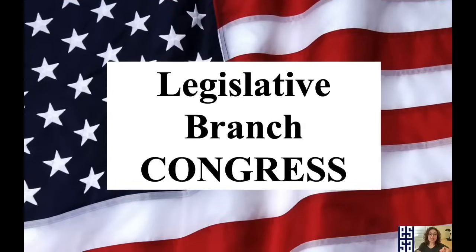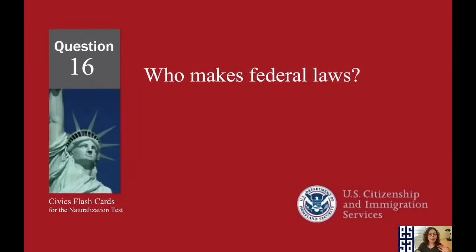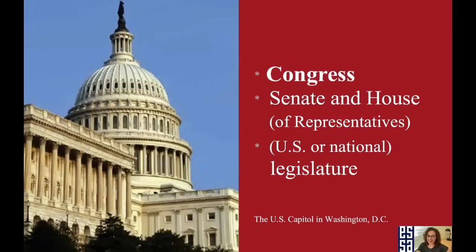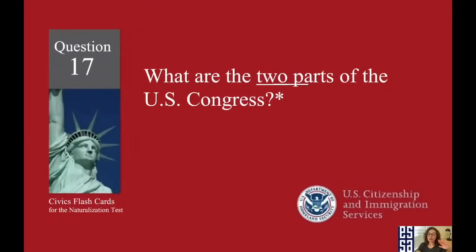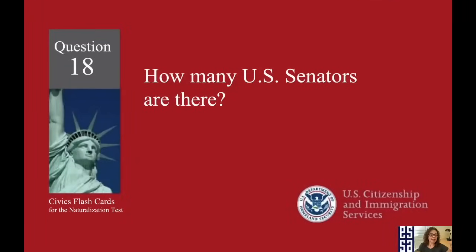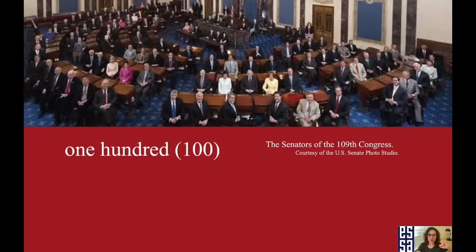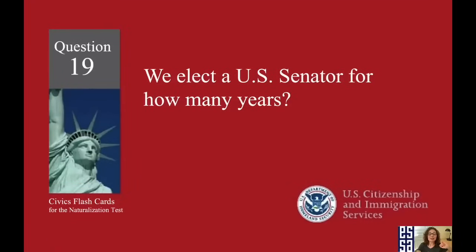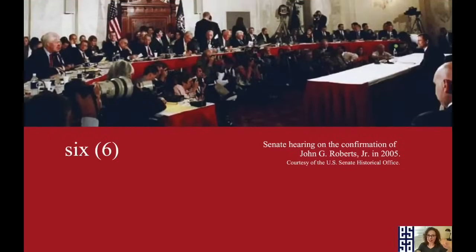Now let's move on to the legislative branch, also known as Congress. Who makes federal laws? Congress. What are the two parts of the U.S. Congress? The Senate and the House. How many U.S. Senators are there? One hundred. We elect a U.S. Senator for how many years? Six years.